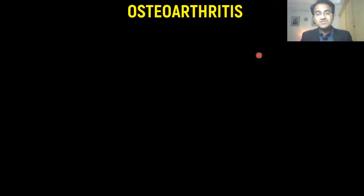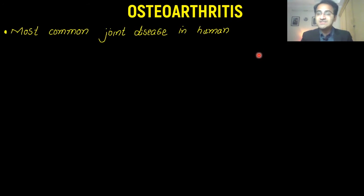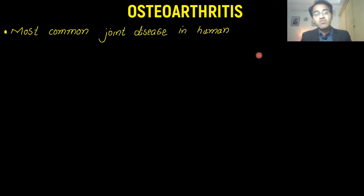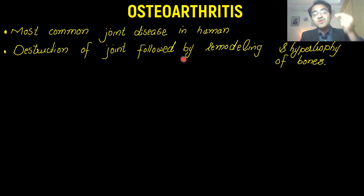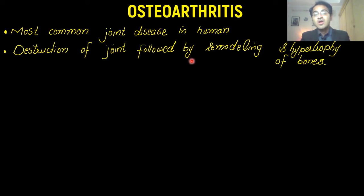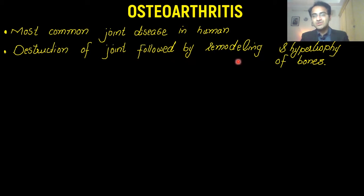What is osteoarthritis? Osteoarthritis is the most common joint disease in human beings. It is age-related destruction of the joints. It involves degeneration and destruction of the joints, which is followed by remodeling and hypertrophy of the bones in an attempt to recover. But this remodeling and hypertrophy results in more damage to the joint.